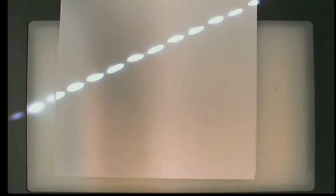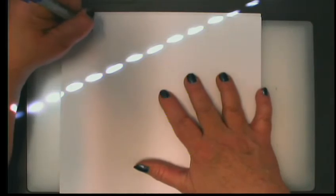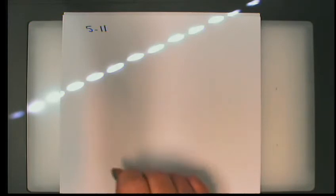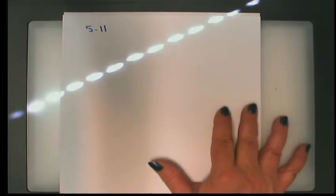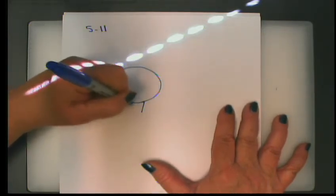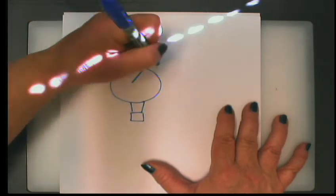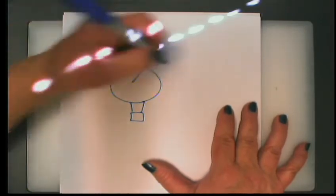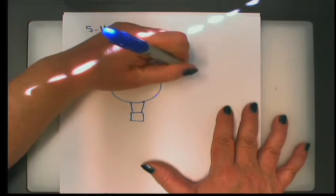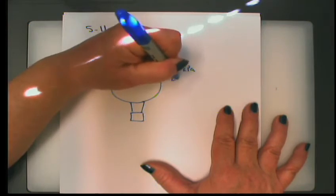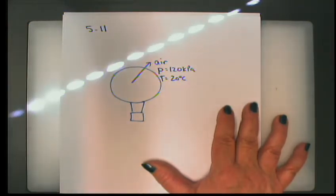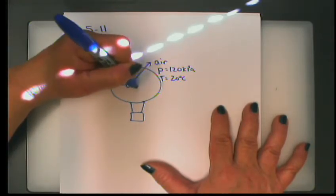That takes us through Section 5.1, up to page 221. Let's look at problem 5.11. A spherical hot air balloon is initially filled with air at 120 kPa and 20 degrees Celsius, with an initial diameter of 5 meters.